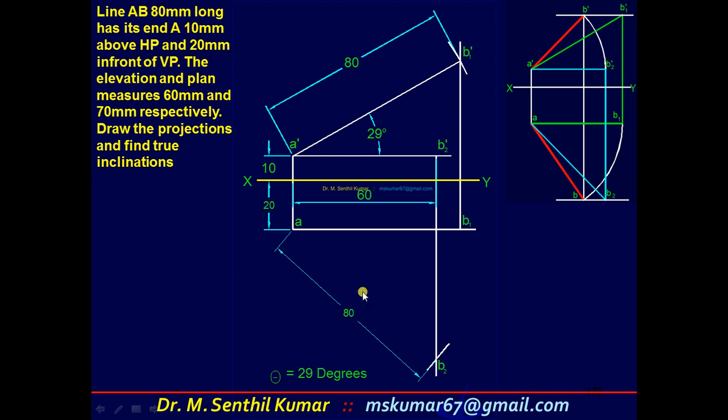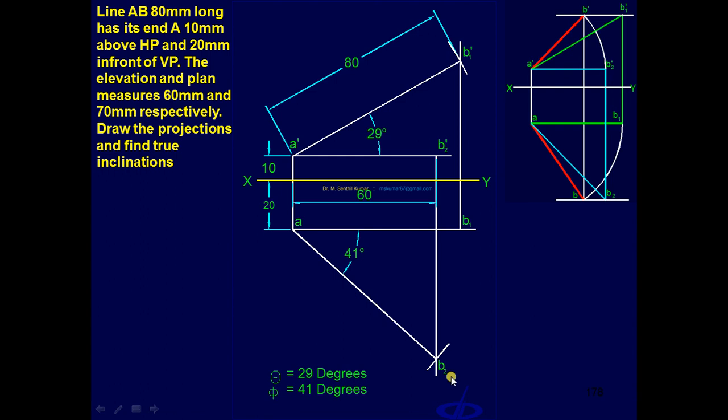Thereby you will be getting the preliminary top view line. Measure this angle - that is equal to phi. Phi is equal to 41 degrees. Now you have constructed preliminary front view set and top view set, so directly you can solve the problem.